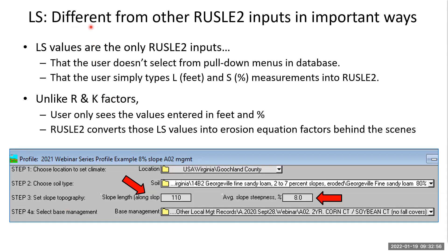LS is different from other RUSLE2 inputs in some important ways. The LS values you put in are the only inputs you don't select from pull-down menus in the database — you actually just type them in. They're the only thing you type into RUSLE2.